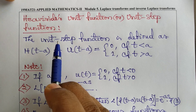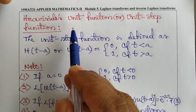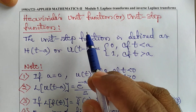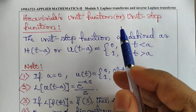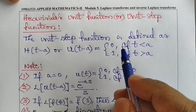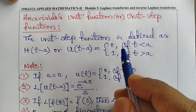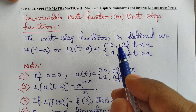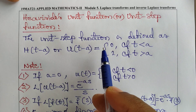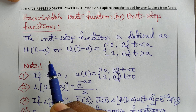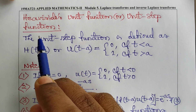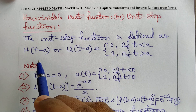Now I will explain Heaviside's unit step function. This is defined by the famous mathematician and electrical engineer Oliver Heaviside. The unit step function is defined as h(t - a), using the first letter of the name Heaviside.